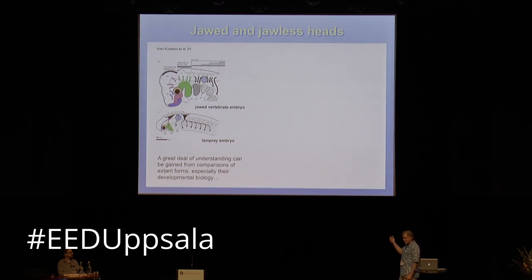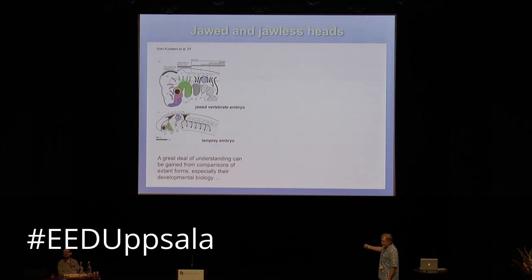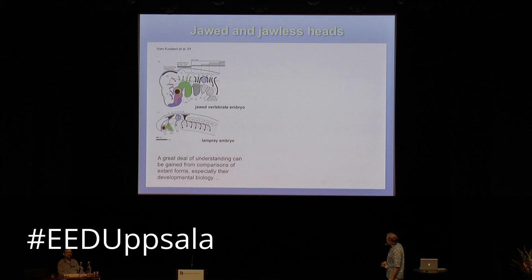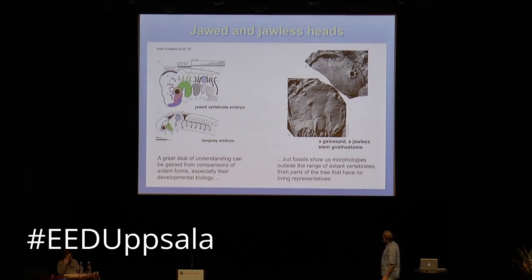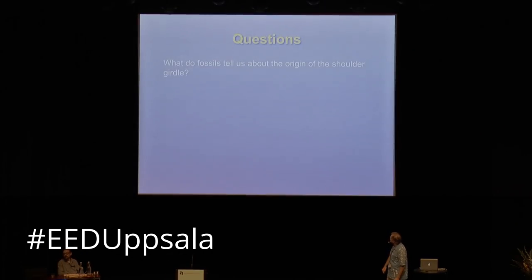To understand how these features evolved and how the jawed vertebrate architecture arose, we can gain understanding from comparisons of extant forms, especially developmental biology. This diagram by Shigeru Kuratani shows early development in the jawed vertebrate and the lamprey. Without going into detail, these things do their early head development in a very similar manner — looking at migration of neural crest streams essentially the same. But that can only get you so far; you also need fossil data, because fossils show us morphologies outside the range of extant vertebrates and from parts of the tree with no living representatives.